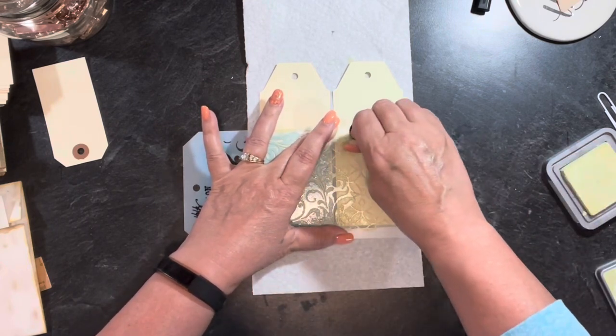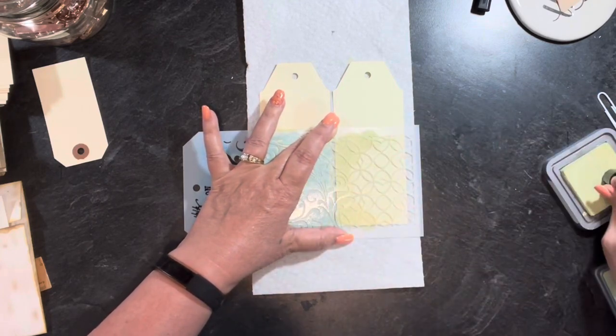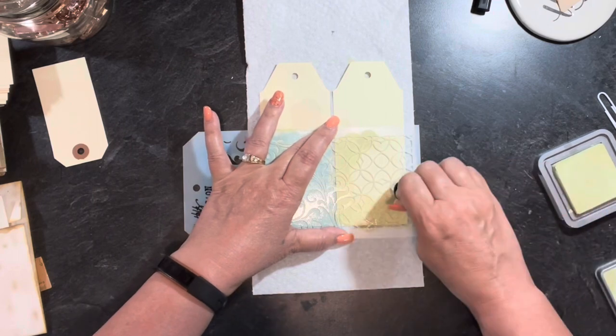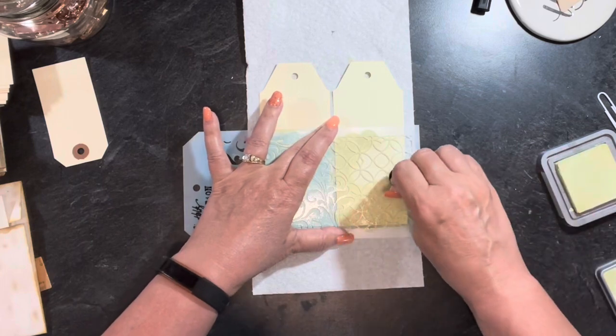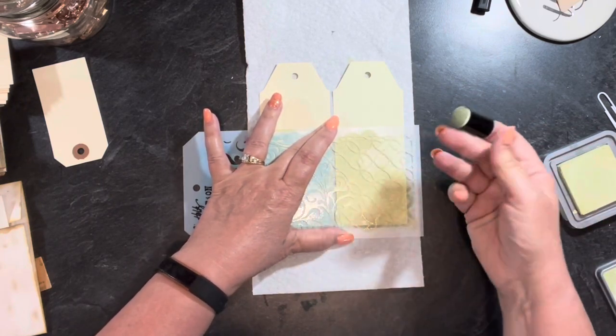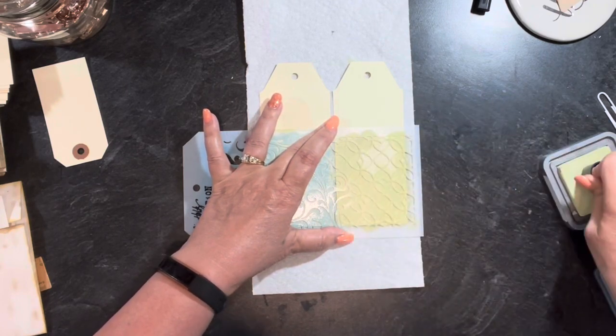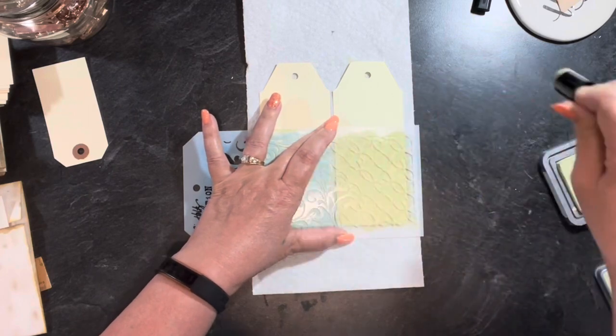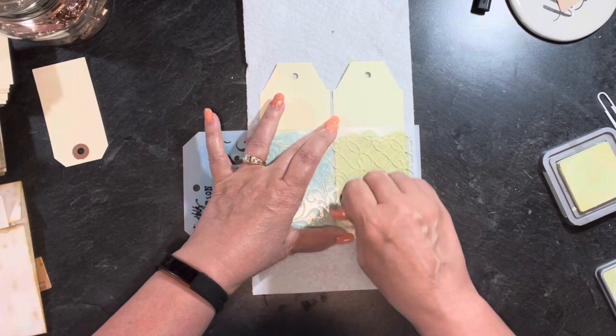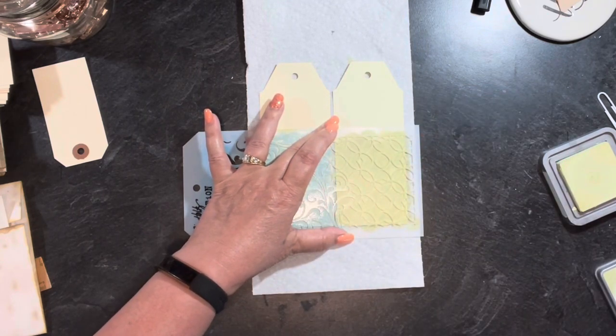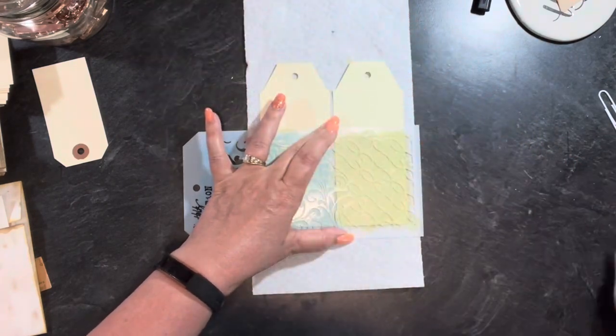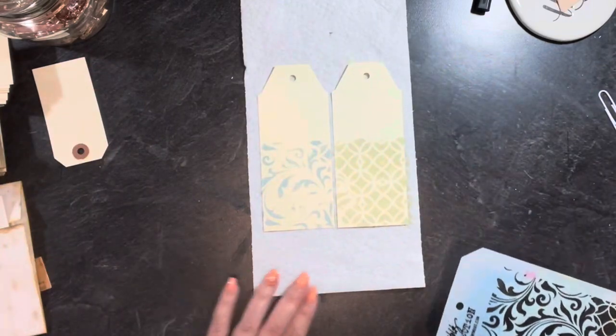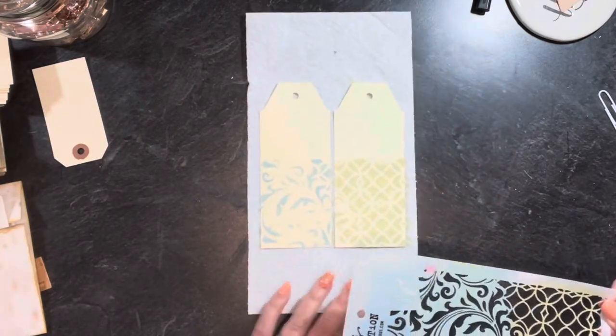You'll notice I am pouncing through the stencil and not doing this. With the finger daubers, it's actually, it's my opinion, it turns out better this way. Obviously, it's not going to be solid. I think you would have to get a bigger foam applicator if you wanted it to be more solid. Myself, I kind of like the airy look that this gives.